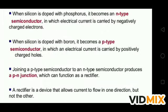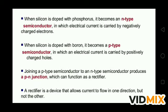When silicon is doped with phosphorus, it becomes an N-type semiconductor, in which electrical current is carried by negative charge electrons. Phosphorus has five electrons in its outer shell, and when doped with silicon, the extra electron is released and is capable of making it conduct. Since the electron is negative, and it is donated by phosphorus, this is called an N-type semiconductor. N means negative — the electron is donated by the phosphorus.